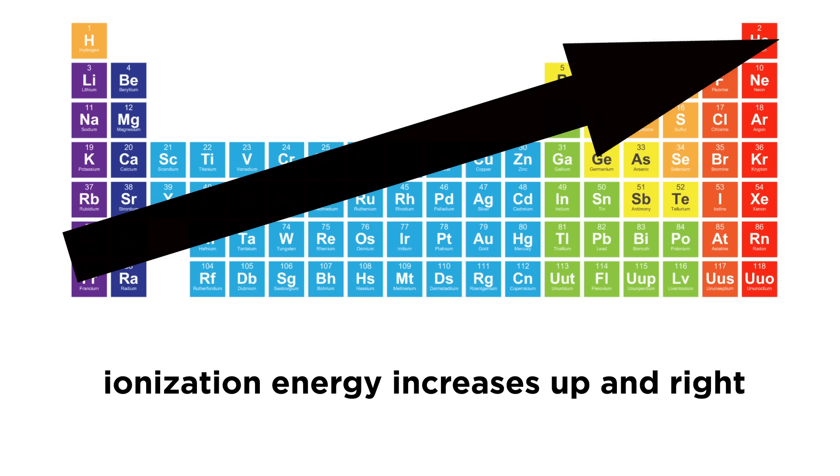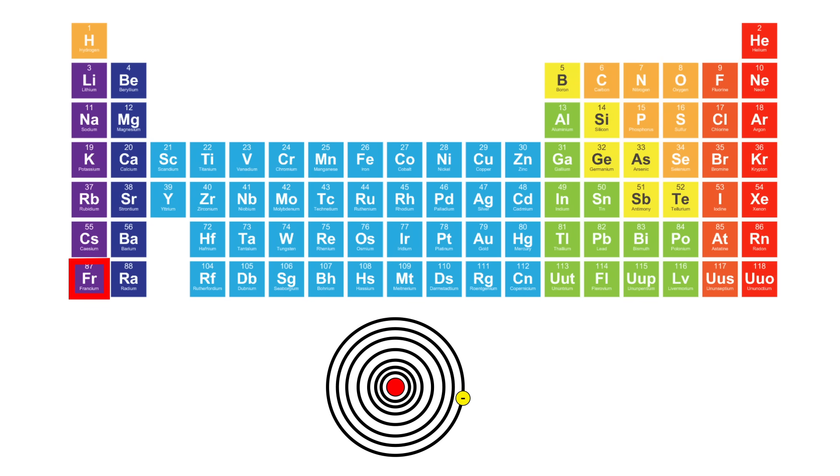This means the ionization energy trend is precisely the opposite of the atomic radius trend. Francium, a very large atom with only one valence electron, will be easy to ionize because the electron is so far away from the nucleus, and atoms like to have their outermost shell completely full. Losing the electron means this shell is gone, and the one below is completely full, so elements in group one will easily lose one electron.